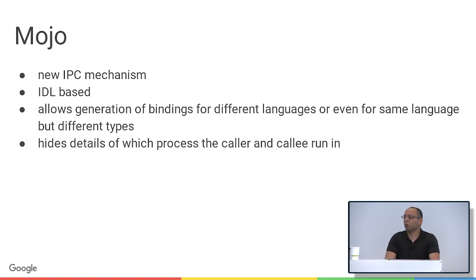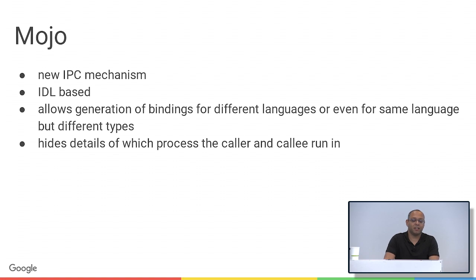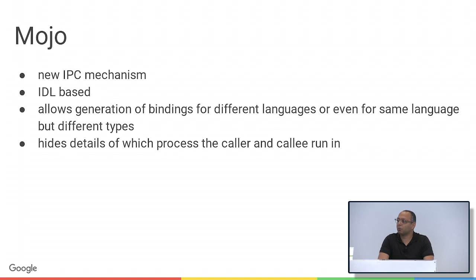Another new thing we did is Mojo, which is our new IPC system. Ken and Oksana will talk about this more later today, but I wanted to give a high-level overview. It's IDL-based, which is different from our old system, and solves a lot of issues we had with our macro-based approach. Previously it was hard to send platform handles like shared memory — they required special code depending on where the caller and callee ran. If you wanted to move something to a different process, you'd need different code paths. We also couldn't send IPCs directly from Blink, so there were layers of busy-work just converting one type to another.